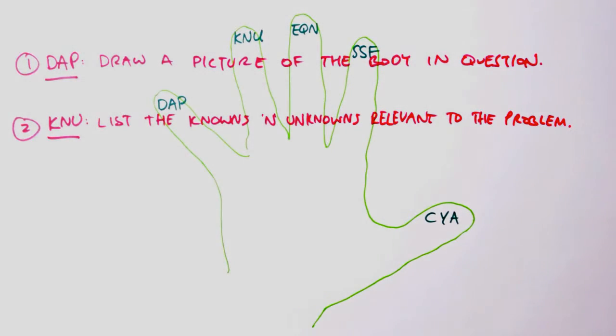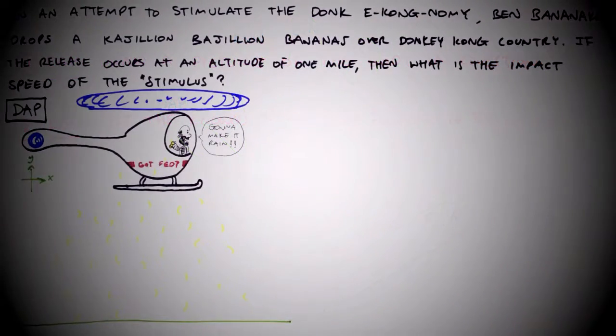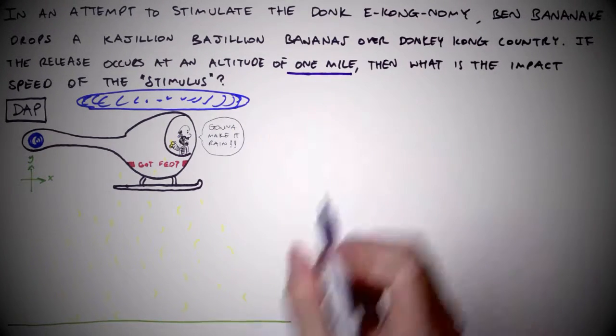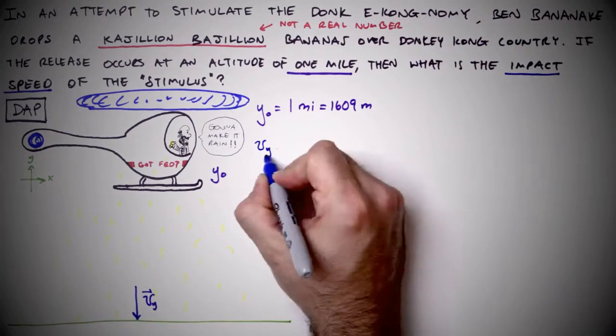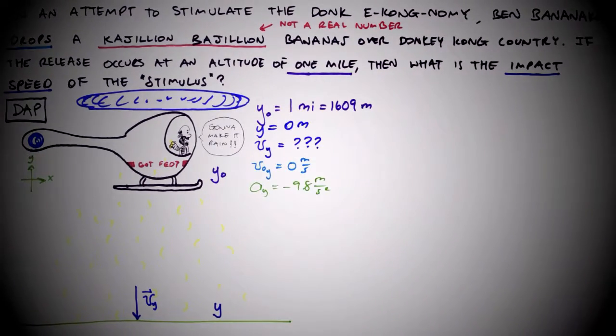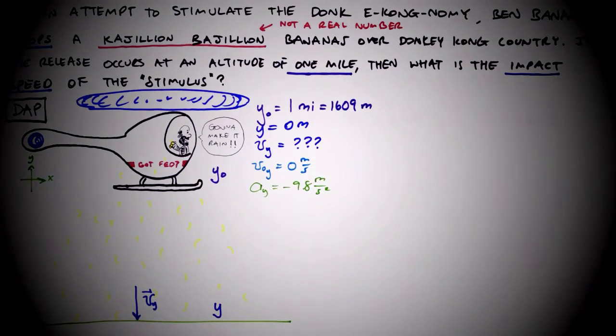Step two: knowns and unknowns. We will likely need all of the numerical values given in the wording of the problem, and possibly a few more from an appendix or a Wikipedia entry. These numerical values will be implemented in the 11th hour of our problem solving.